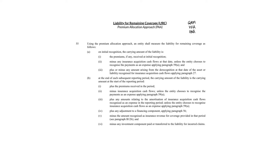We're just going to go through the premium allocation approach, but I want to emphasize that this premium allocation approach differs from the GMM and the VFA in principle, in that it looks retrospectively to calculate the liability for remaining coverage, whereas the GMM and the VFA look at things prospectively. The reason why PAA looks at things retrospectively is because it looks at events that have already happened in the past and in the current period to determine the actual liability, whereas the GMM and the VFA look at what is about to happen in the future and adjustments that affect the liability.